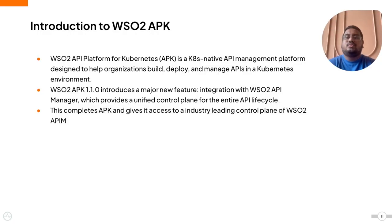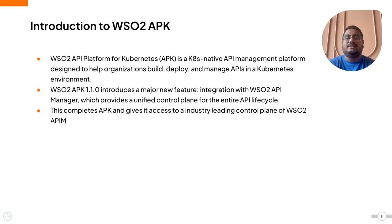WSO2 API Platform for Kubernetes, or APK for short, is a Kubernetes-native API management platform designed to help organizations build, deploy, and manage APIs within the Kubernetes environment. The latest version, WSO2 APK 1.1.0, introduced a significant new feature integrating with WSO2 API Manager, providing a unified control plane for the entire API lifecycle. This integration enhances APK by giving it access to the industry-leading control plane of WSO2 API Manager.